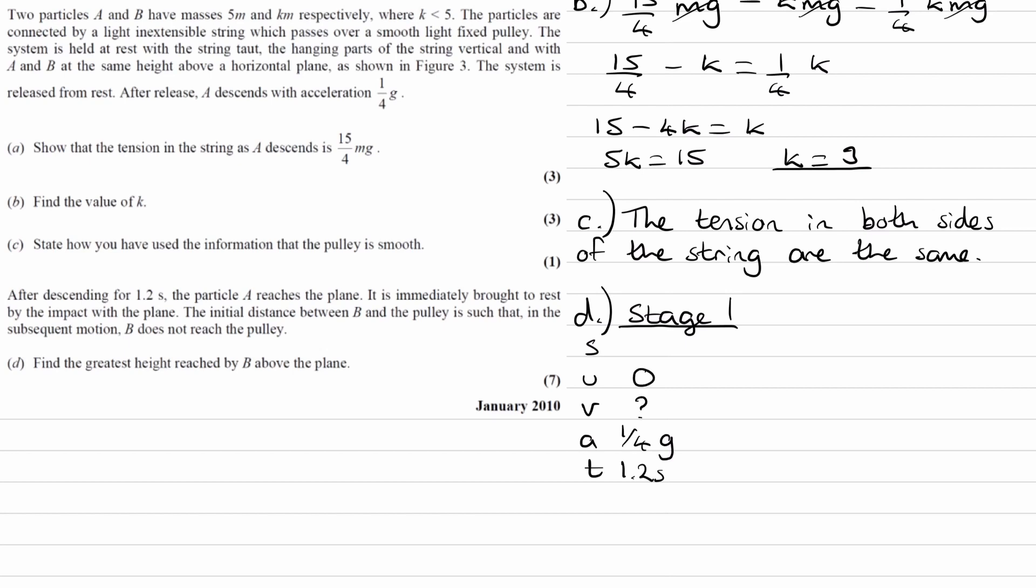And if we work out what V is, we then have the initial speed of B for stage two. We're trying to work out in this question the greatest height reached by B above the plane. So whatever distance that A falls down by, that's how high A and B are off the ground. And that will be then how high B travels in stage one. So we need to work out this as well. I'm going to call it X. I'll draw that on the diagram so you can see what that would be.